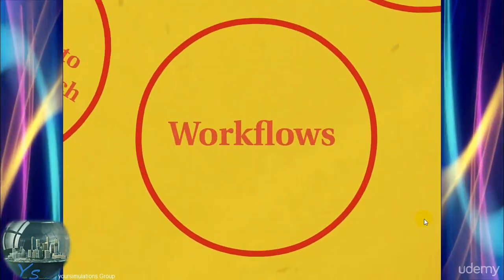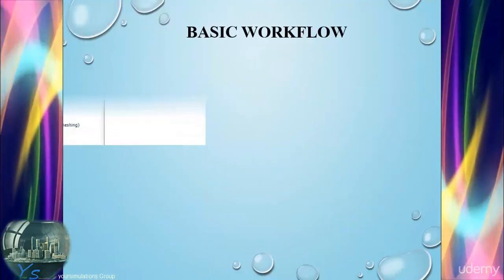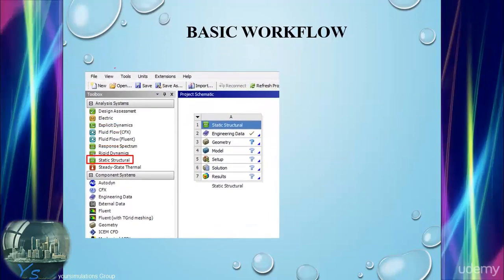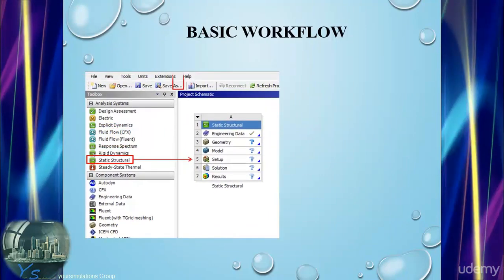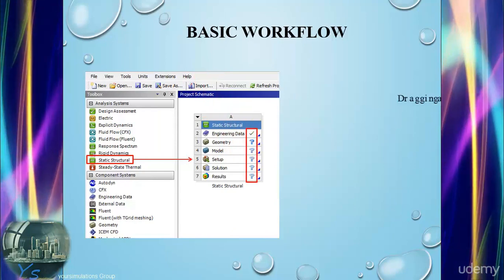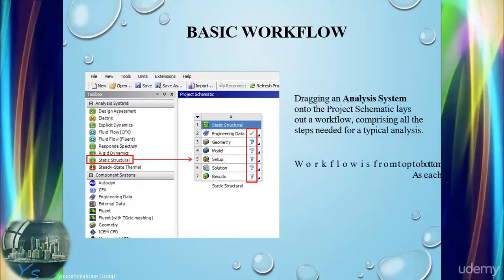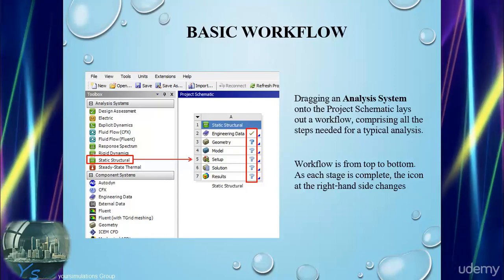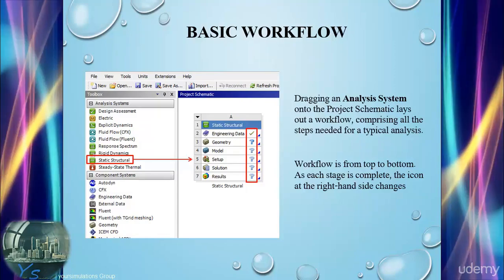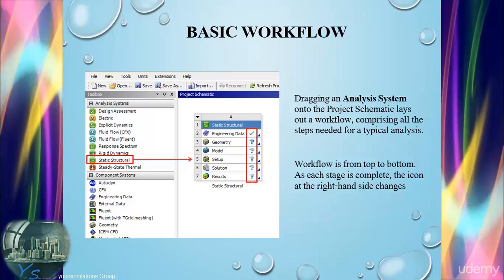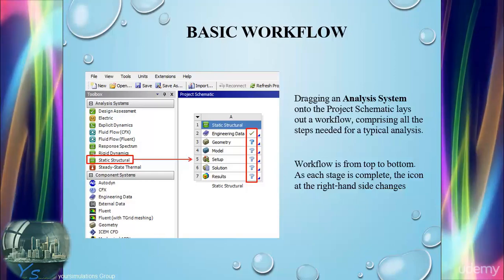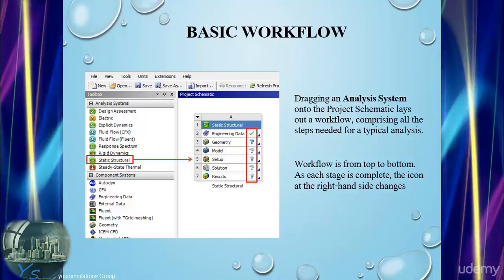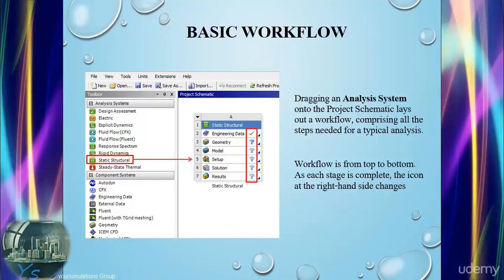In this slide we cover the basic workflow of Workbench. On the left hand side we can see our toolbox with our analysis systems and our component systems. To make a simulation the active simulation, we need to drag some of the analysis or component systems into the project schematic window. That can be done by left clicking on the particular item in the toolbox and dragging into the project schematic before releasing. This then makes it the active simulation system.